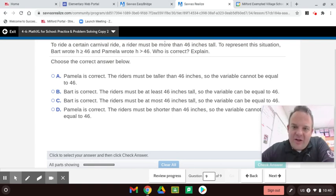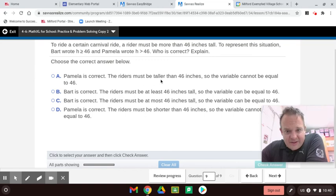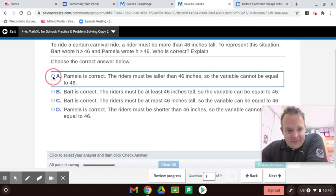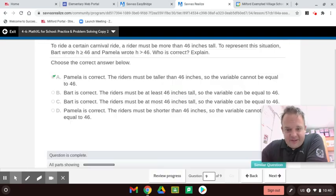So it can't be greater than or equal to 46. So Pam is correct. Pam is correct. The riders must be taller than 46. So the variable cannot be equal to 46. That's correct. All right guys.